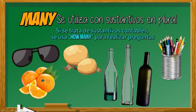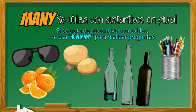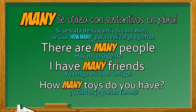Examples of countable nouns: glasses, oranges, potatoes, bottles, pencils. Many is used with plural countable nouns — things you can count individually. We use how many to ask questions. For example: there are many people — hay mucha gente. I have many friends — yo tengo muchos amigos. How many toys do you have? — ¿Cuántos juguetes tienes? Toys are countable things; you can count them one by one.